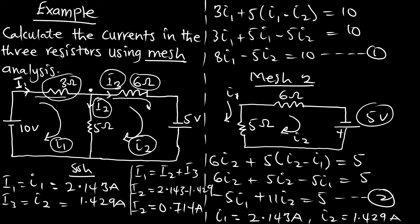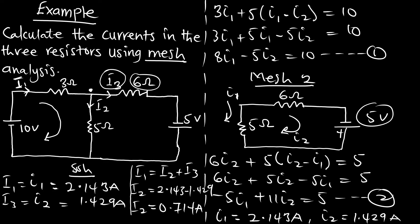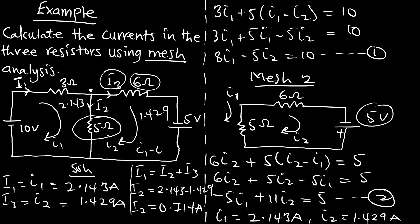We can also use the mesh approach to find I2: since i1 and i2 oppose each other through the 5 ohm resistor, the actual current is the difference — 2.143 − 1.429 = 0.714 amperes. This is the mesh analysis method — it is very simple and straightforward. Thank you for watching this episode; please subscribe to the channel, like, and drop your comment.